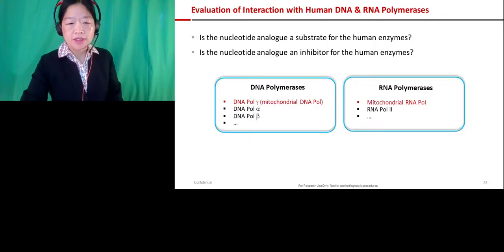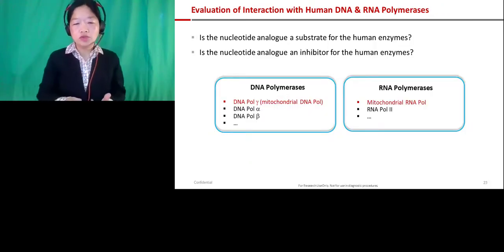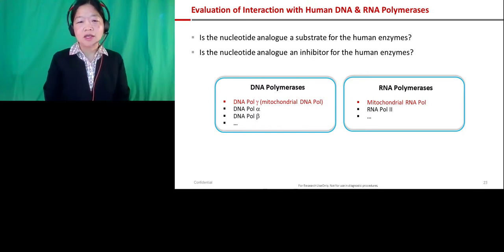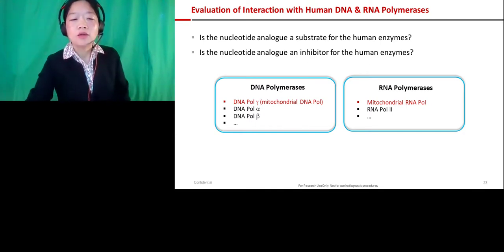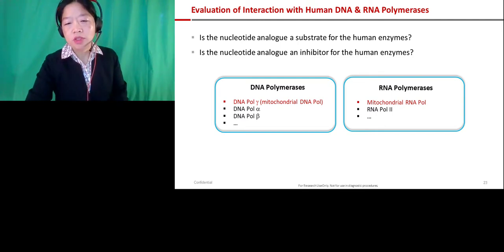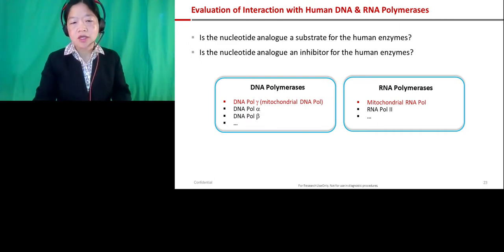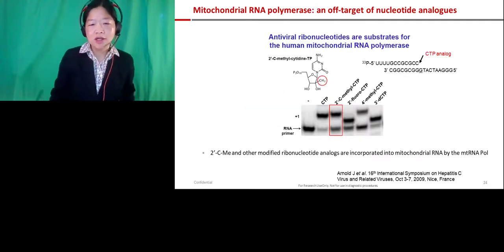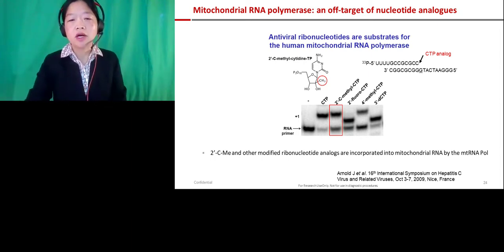The biochemical assay answers two questions: first, is the analogue a substrate for human enzymes? Second, is it an inhibitor? The two types of enzymes we look at are DNA polymerases and RNA polymerases, depending on the inhibitor being studied. If we're looking at a DNA virus, we focus more on DNA polymerases. Conversely, for RNA viruses, we focus on RNA polymerase off-targets, since viral polymerases have distinct substrate recognition.